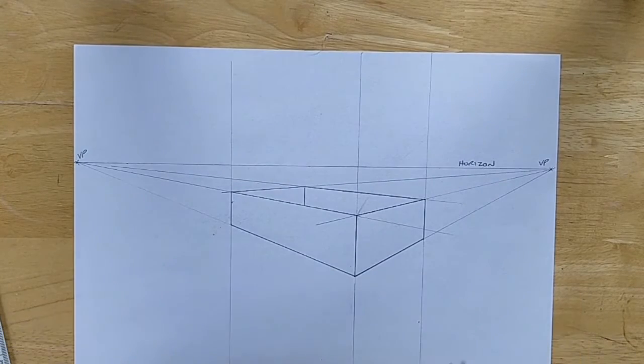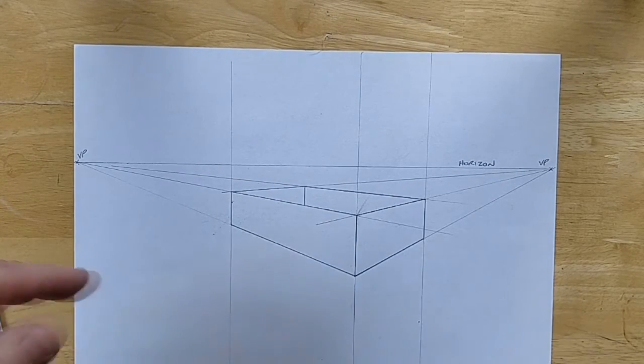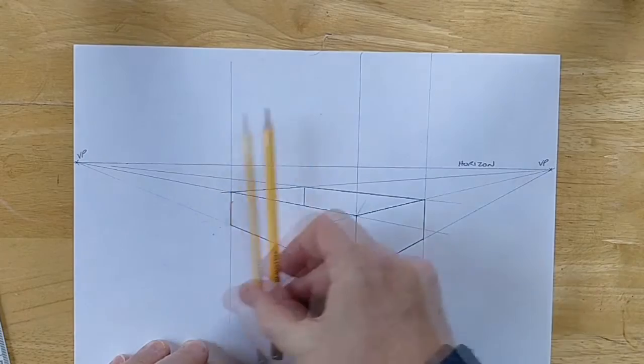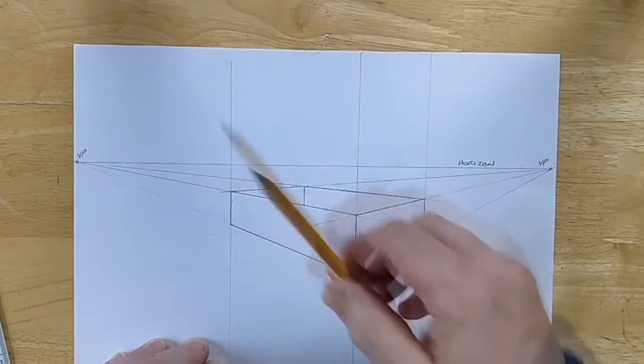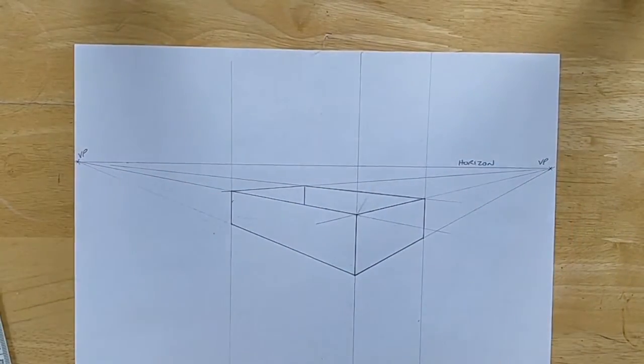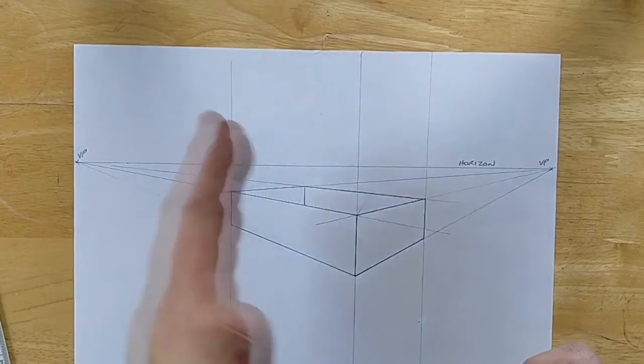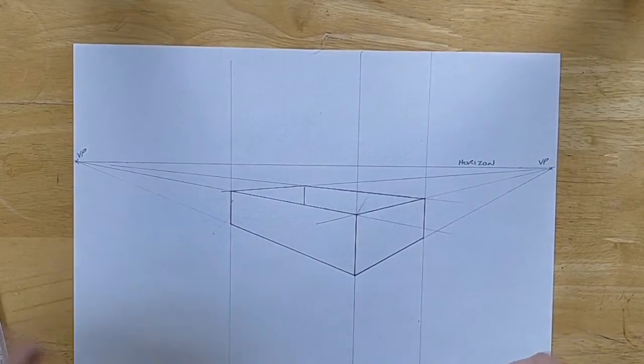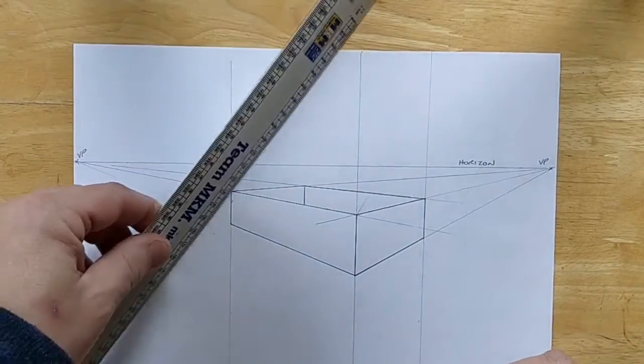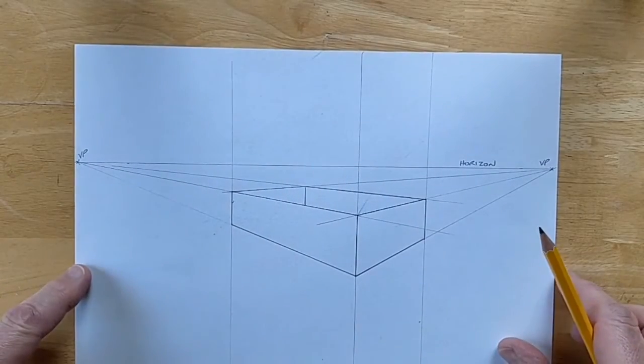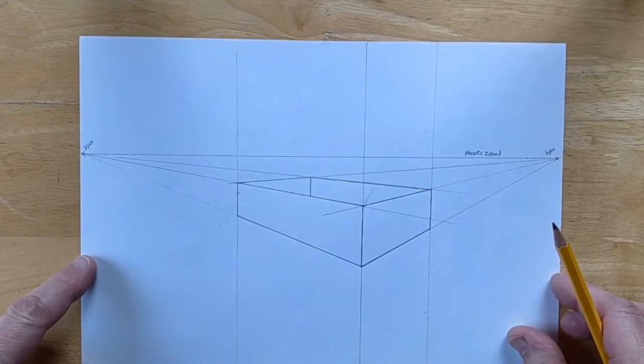Right. So, as we can see we've got our vertical lines and we've got lines going to vanishing points. Because it's a box, because it's a cuboid, the lines can only be vertical or going to a vanishing point. If you've got a line going off at a strange angle it's going to make your drawing look wrong.